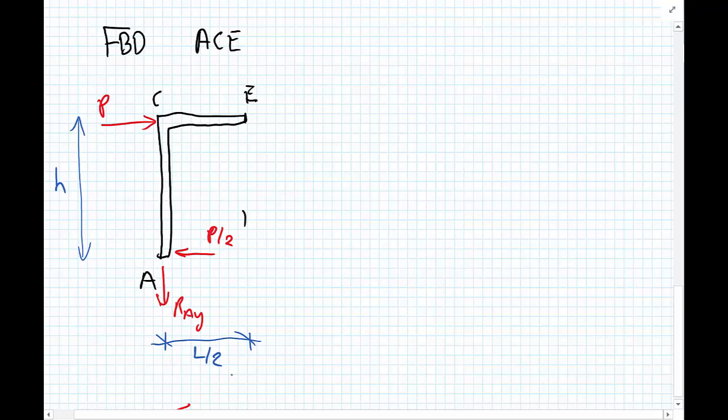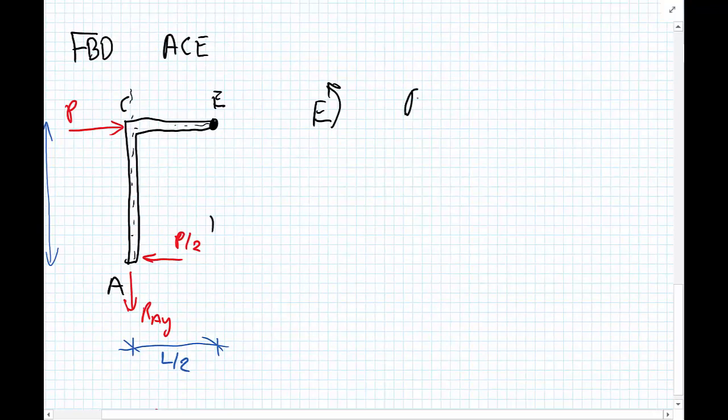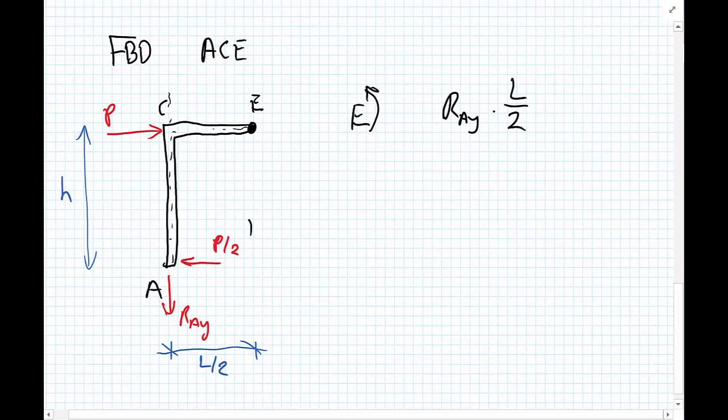So if we take moments about point E, we can see that the point load P goes directly through E so it has no lever arm. But we have RAY acting through a lever arm of L upon 2, and that will be going in the anticlockwise direction around E. So we have RAY multiplied by L upon 2.